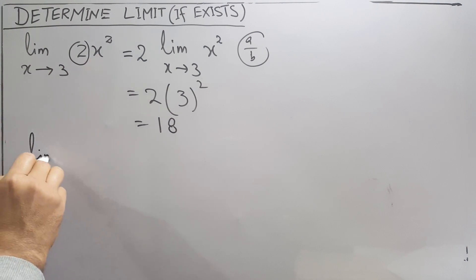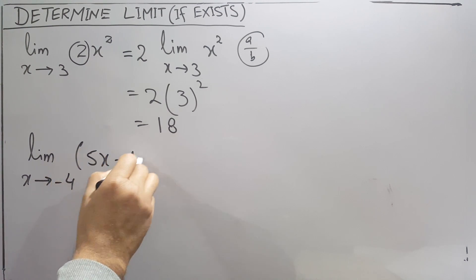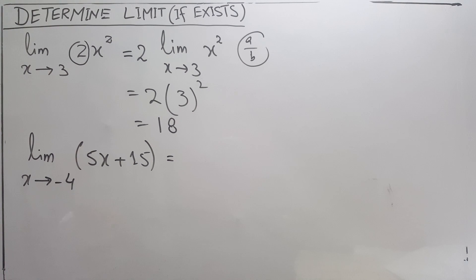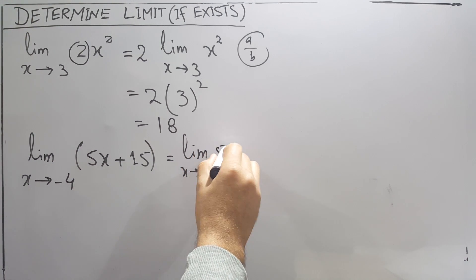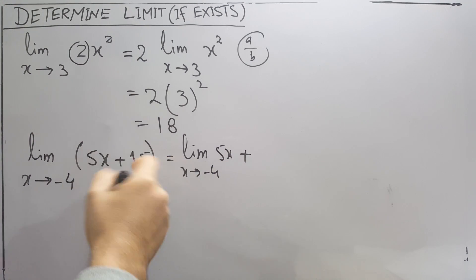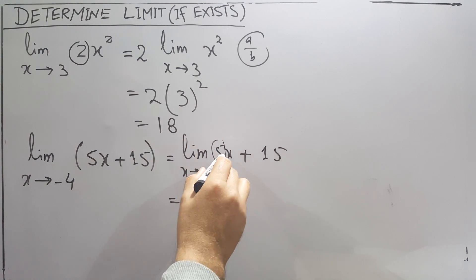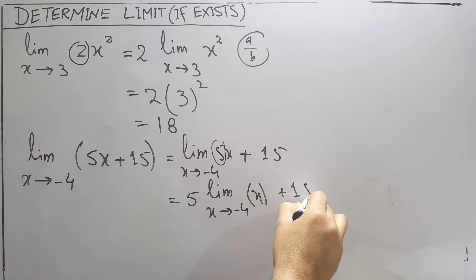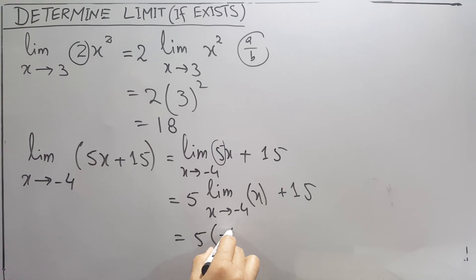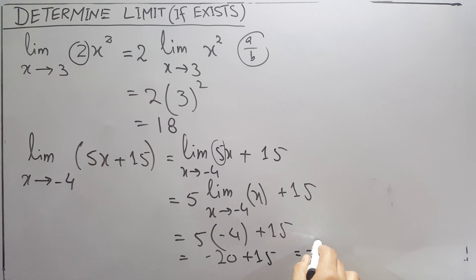Similarly, the next problem is: limit as x approaches -4 of 5x + 15. According to limit properties, you can split the limit across each term. 5 is a constant multiplying x so we take it out, then apply the limit on x to get -4. That gives 5 times -4 = -20, and -20 + 15 = -5.